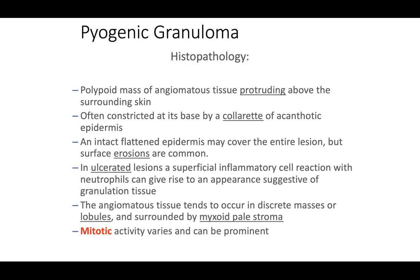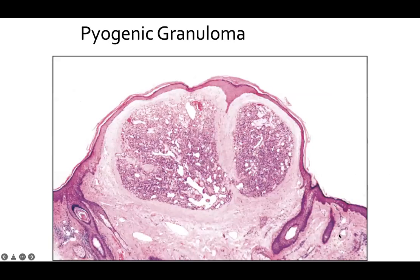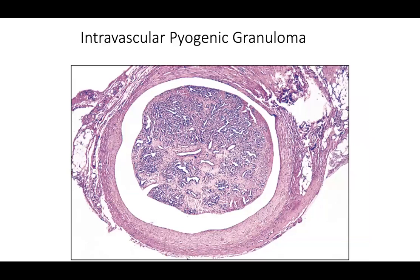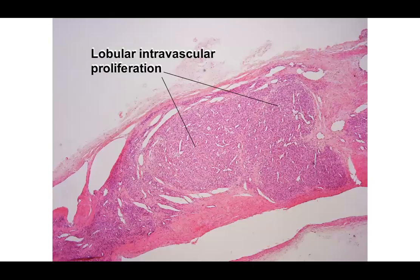The angiomatous tissue tends to occur in discrete masses or lobules, often with a surrounding myxoid pale stroma. Mitotic activity varies and can be prominent. Here you see the collarette wrapping around the lobular capillary hemangioma; on higher power you'll see lobular architecture composed of very thin-walled spaces and endothelial cells. Mitotic figures are frequently found in these lesions. You can also have an intravascular pyogenic granuloma, which looks like a lobular capillary hemangioma but is within a vascular space.